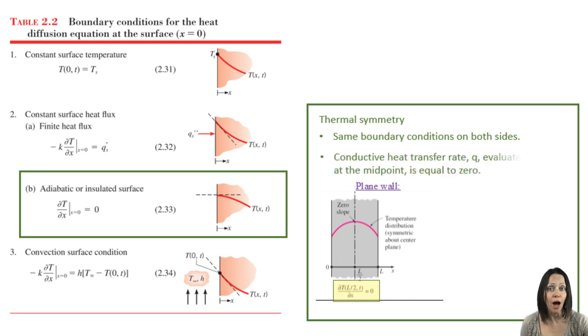And the temperature distribution will look like the pink line drawn on the picture of the plain wall. At the very top of that temperature distribution, the slope is zero. And so the heat transfer rate at the very middle, which is conduction and governed by Fourier's law, is zero.